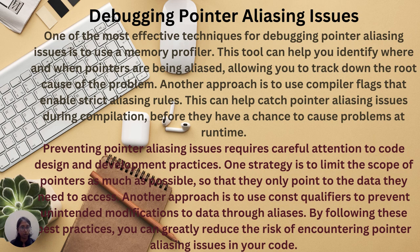Debugging Pointer Aliasing Issues. One of the most effective techniques for debugging Pointer Aliasing issues is to use a memory profiler. This tool can help you identify where and when pointers are being aliased, allowing you to track down the root cause of the problem. Another approach is to use compiler flags that enable strict aliasing rules, which can help catch pointer aliasing issues during compilation before they cause problems at runtime. Preventing Pointer Aliasing requires careful attention to code design. One strategy is to limit the scope of pointers so that they only point to the data they need to access. Another approach is to use const qualifiers to prevent unintended modifications to data through aliases.